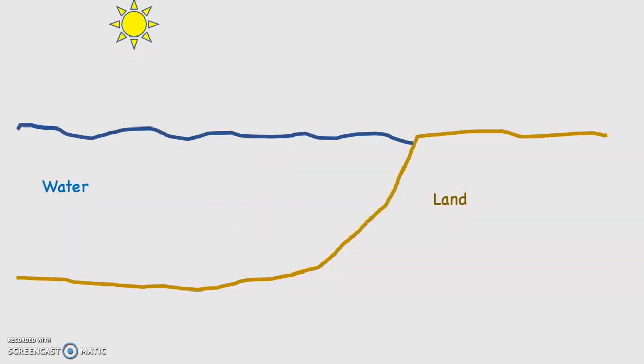How do you like this diagram? See the sun up there? On the left-hand side, you can see water, which is, let's say, the ocean. And on the right-hand side, land. Let's say that's North America.